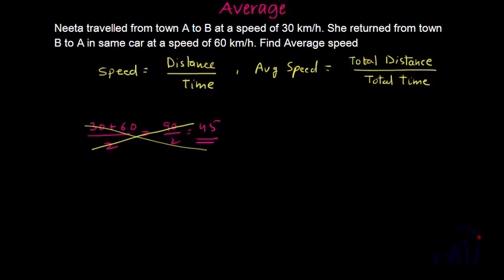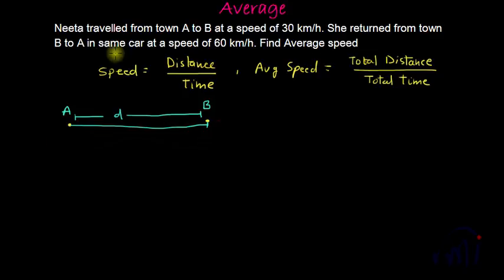Now let's see how do we find the average speed. Suppose this is town A and this is town B and let's assume the distance between these two towns is D. And in first case when she is traveling from town A to town B suppose she takes time equal to T and distance equal to D.